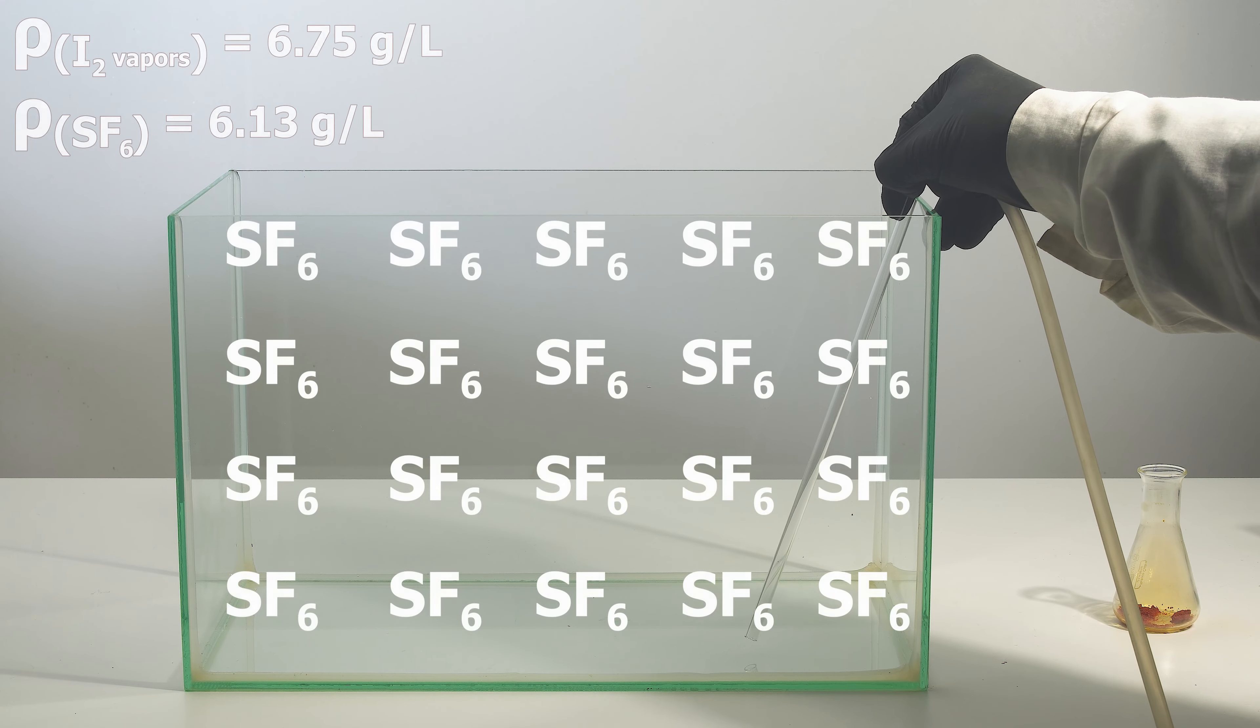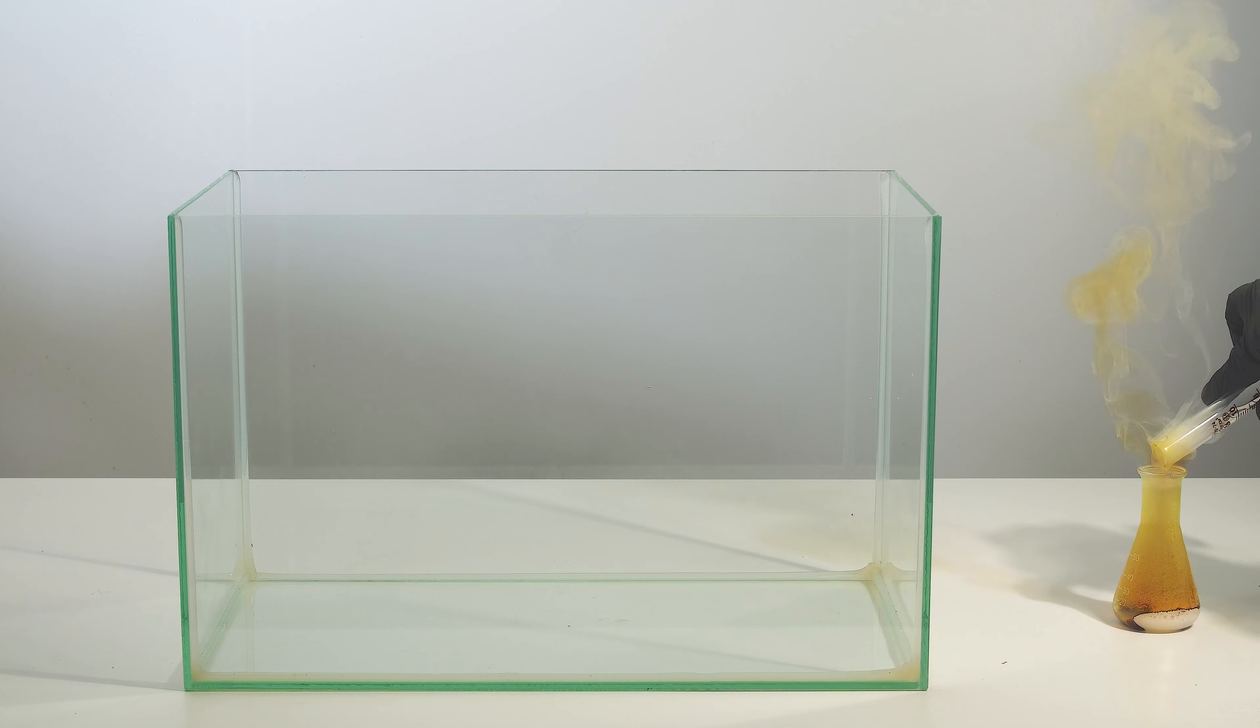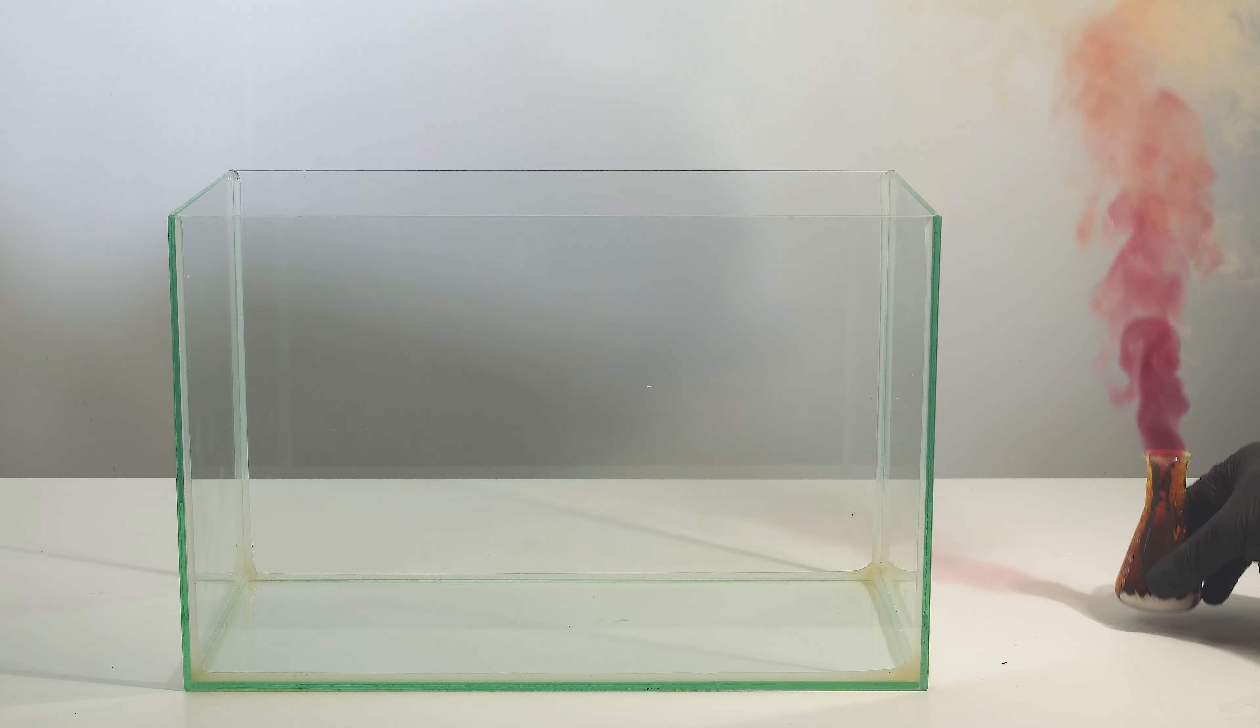The density of iodine vapors is approximately equal to the density of sulfur hexafluoride. That's why instead of settling down at the bottom of the glass box, iodine vapors cover leather forming a real iodine cloud.